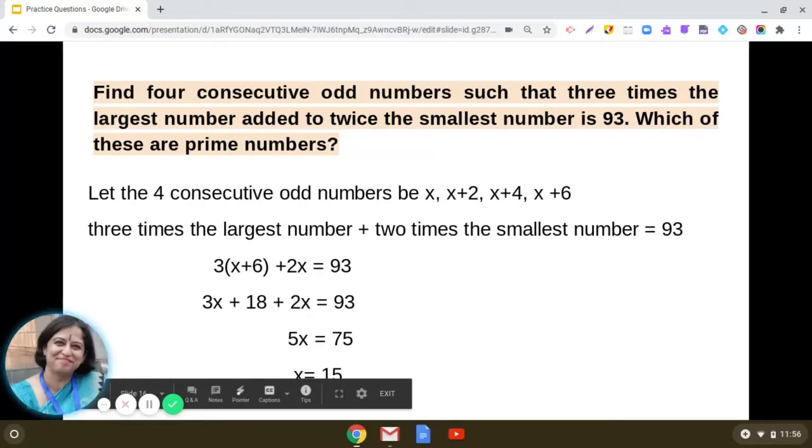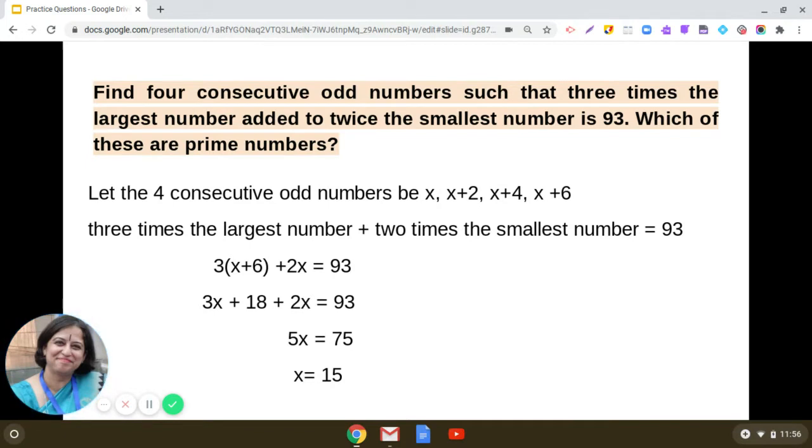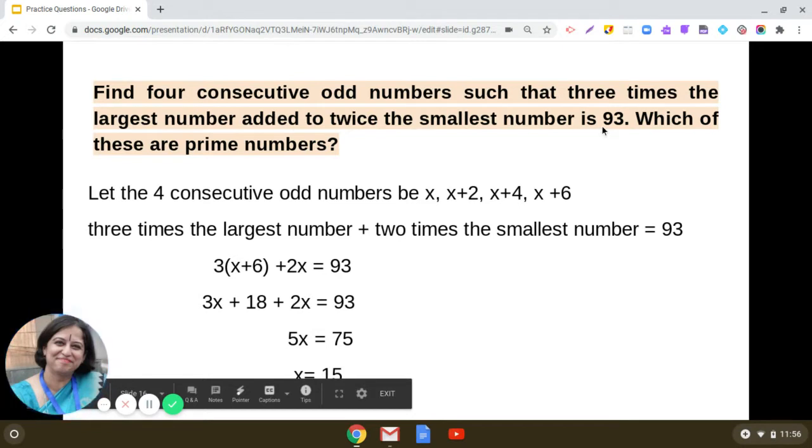Dear students, let us discuss this interesting question from the chapter linear equations in one variable. Find four consecutive odd numbers such that three times the largest number added to twice the smallest number is 93. Which of these are prime numbers?